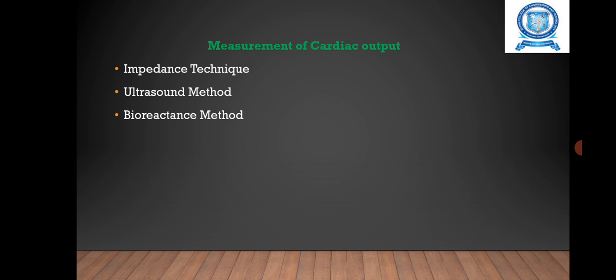The last category is measurement of cardiac output. Here are three methods. The first one is impedance technique, which can determine cardiac output electronically by the impedance method.